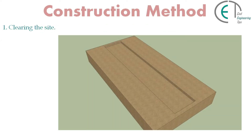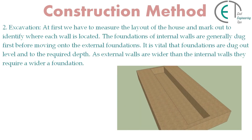Now I will demonstrate the complete construction process of strip footing step by step. First, we have to clear the site, then we go for excavation. We measure the layout of the house and mark out where each wall is located. The foundations of the walls are generally dug first before moving to external foundations. It is vital that foundations are dug level and to the required depth, as external walls are wider than internal walls and require a wider foundation.